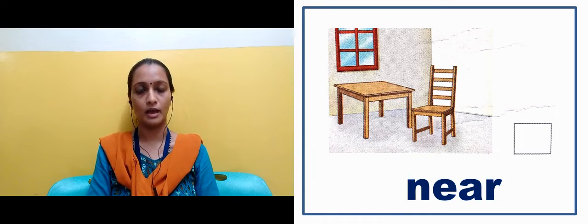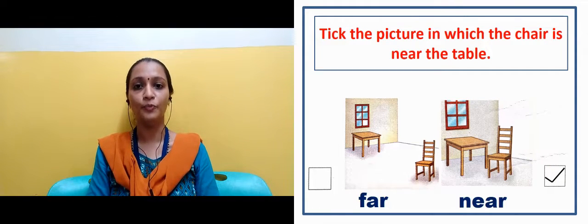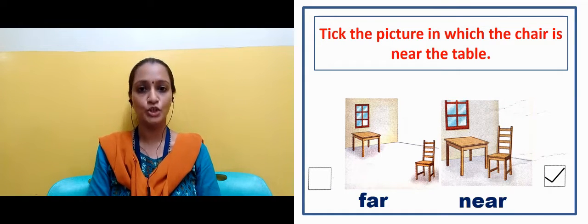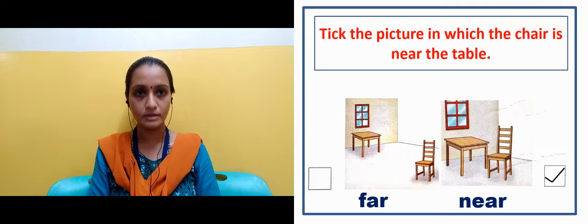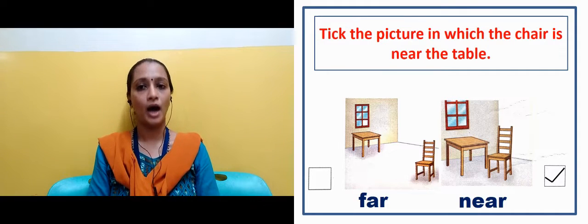Now in the next slide you can see that there will be two images, and in your book there is a question: which chair is near to the table? Toh jho chair table ke nasdeek hai, woh wale image mein aapko tick karna hai.